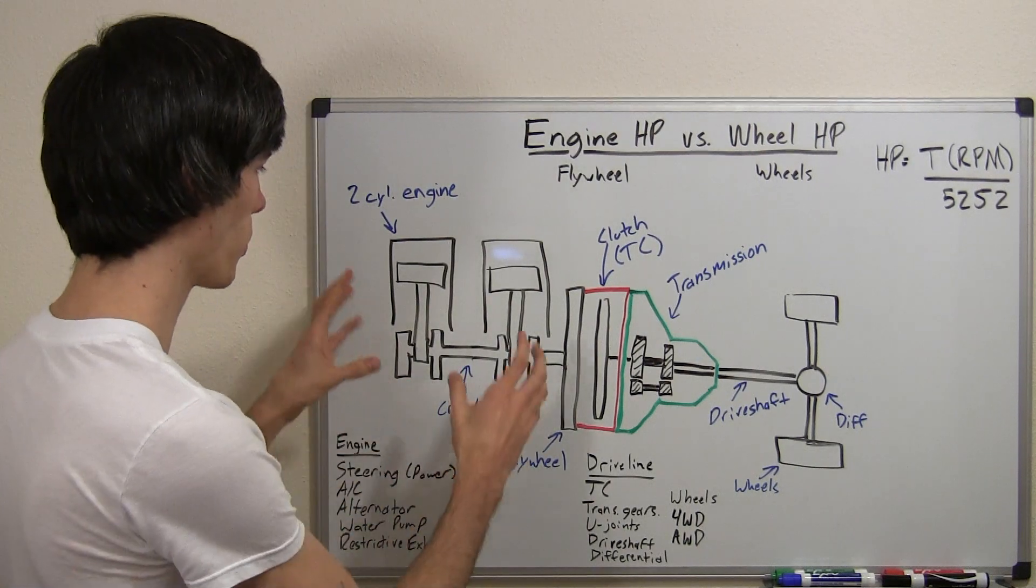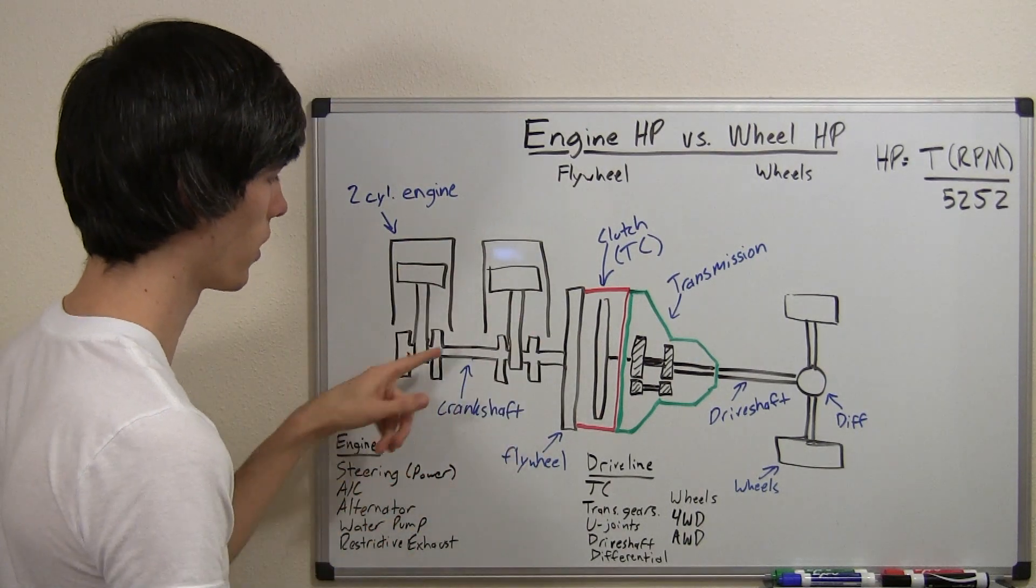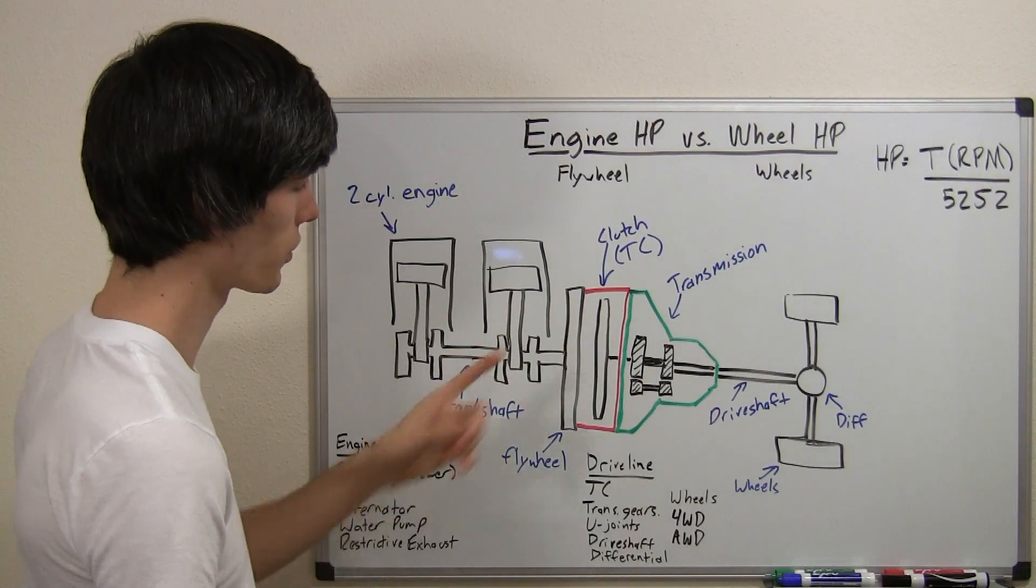So here we've got an example. We've got our engine, our two-cylinder engine, and it's rotating this crankshaft, which is rotating the flywheel.